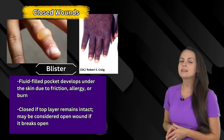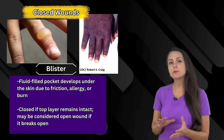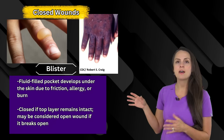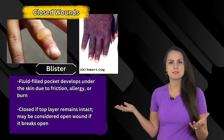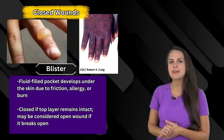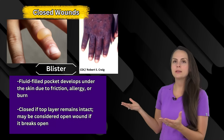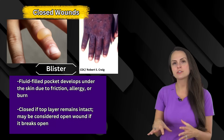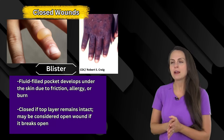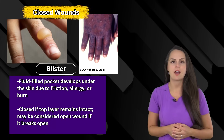Then there's blister, and this is a type of wound where we have a fluid-filled pocket that forms underneath the epidermis — the outer layer of the skin. This fluid-filled pocket can occur because of friction on the skin, or an allergy, or a burn. Remember this is going to be a closed type wound because the skin is still intact.